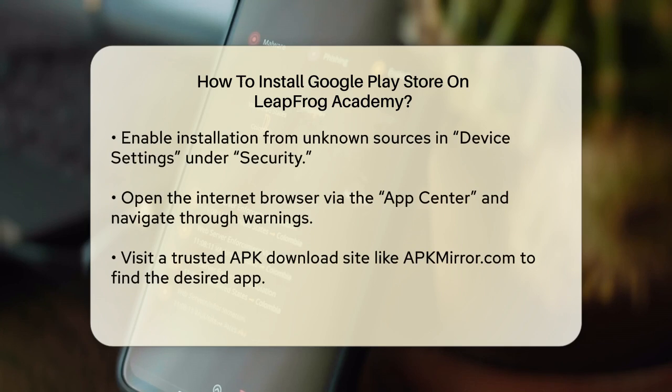Start by accessing the parent screen on your LeapFrog Epic. Power on the device and tap the parents icon in the top right corner. Enter your parental lock code when prompted.